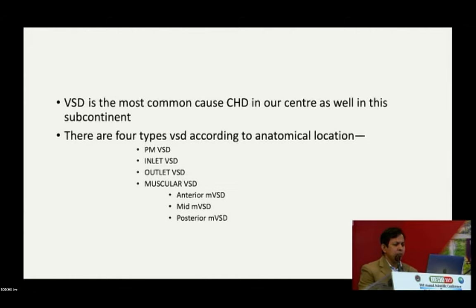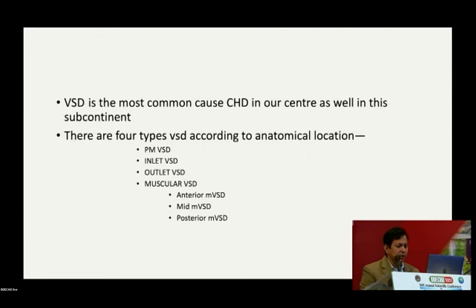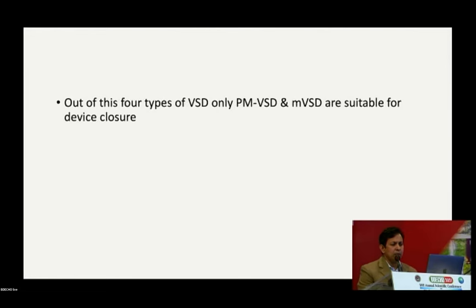VSD is the most common congenital heart disease in our center as well as in the subcontinent. There are four types according to anatomical location: perimembranous VSD, inlet VSD, outlet VSD, and muscular VSD. Muscular VSD has three subtypes: anterior, mid-muscular, and posterior muscular. Of these four types, only perimembranous and muscular VSD are suitable for device closure.